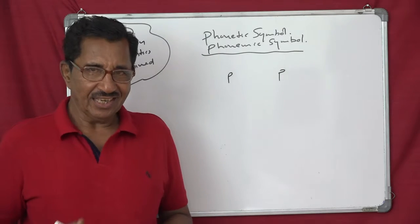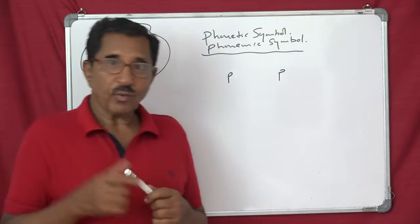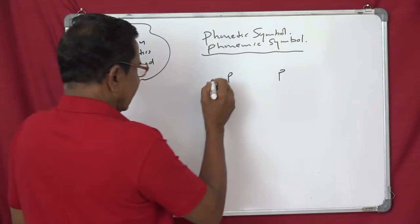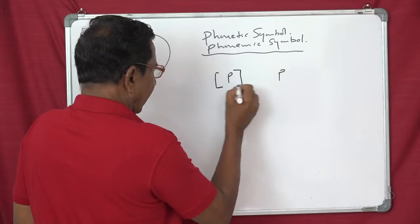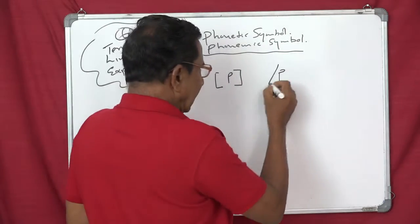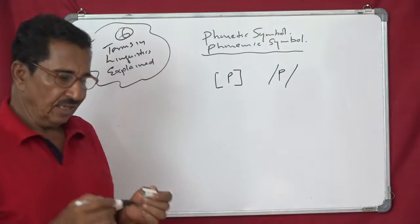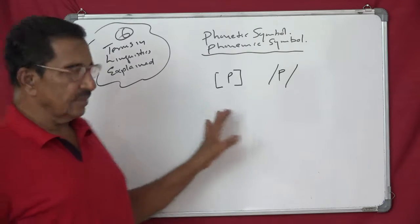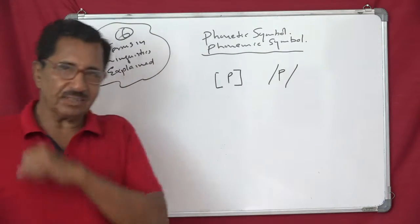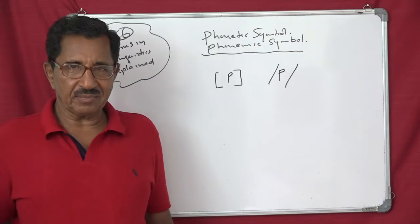But how will you distinguish it? A phonetic symbol is written within square brackets. So like this, square brackets, there is one difference and a phonemic symbol is written within slashes. This is how you recognize. If you find a symbol written like this, that means it is a phonetic symbol. And if you see it written within slashes, it is a phonemic symbol.